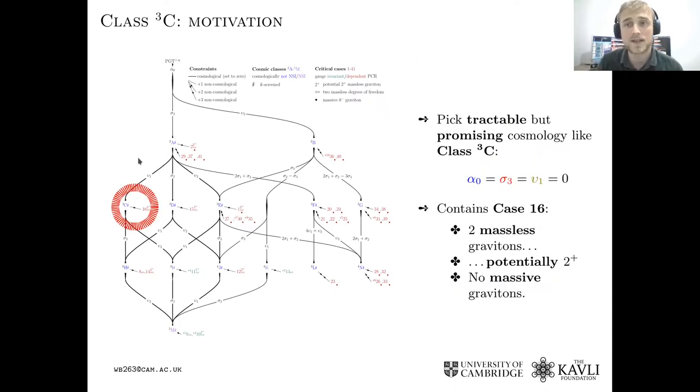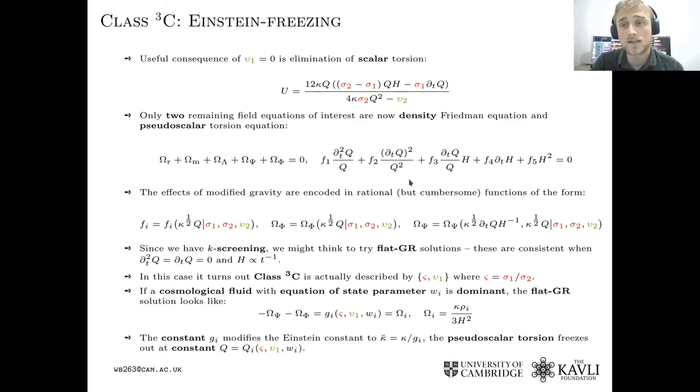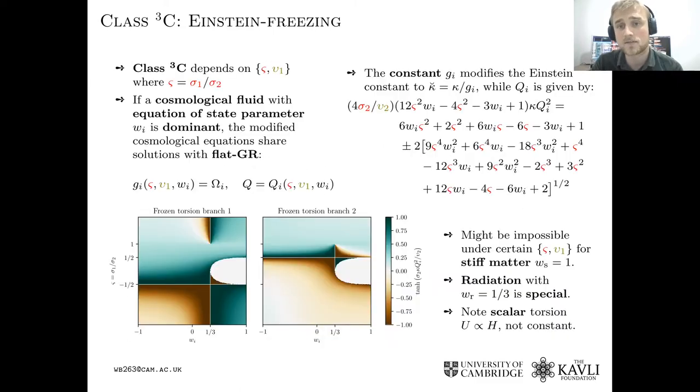So we're going to pick a Goldilocks theory from this cube of novel theories. We're going to pick a theory which is not so constrained that it's going to be very boring, and it's not so unconstrained that it's going to be difficult to work with, and this is the class 3c theory. In terms of its particle content, it has two massless degrees of freedom which could be tentatively identified with the graviton of Weinberg and Witten. And I'll skip over the details of how we actually perform the analysis of the phenomenology.